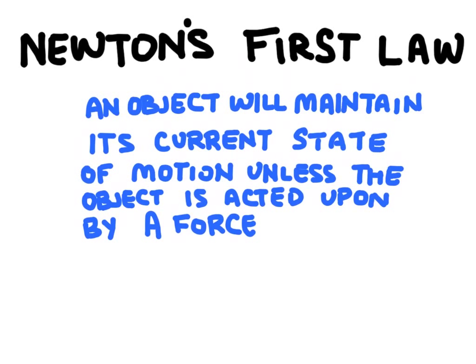The state of motion that we're referring to could mean the object is moving at a constant velocity or it could mean the object is at rest.